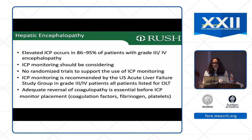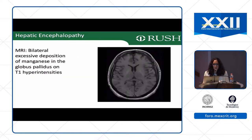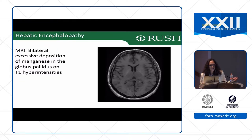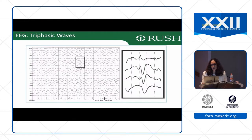Remember that many of these patients have a severe underlying coagulopathy, and this must be corrected before ICP monitor placement — otherwise you can end up with a massive hemorrhage. On MRI in patients with hepatic encephalopathy, the globus pallidus appears dark as a result of deposition of manganese in the globus pallidus, which helps confirm the diagnosis.